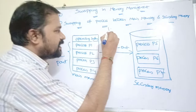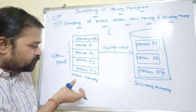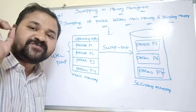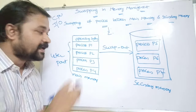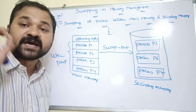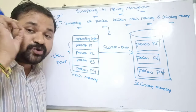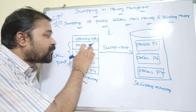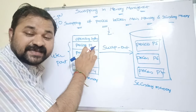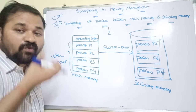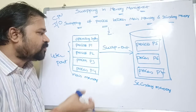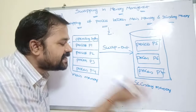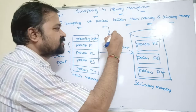Let us take another scenario where the transfer should be done from main memory to secondary memory. Let process P1 be waiting for some I/O operation. During that time, the CPU is sitting idle — there is no need of the CPU for process P1 since it is waiting for I/O. So what the operating system will do is transfer P1 from main memory to the secondary memory, and this is known as swap out. This is the second scenario.